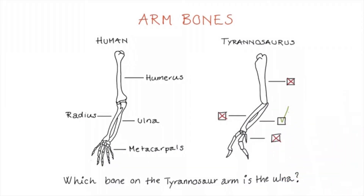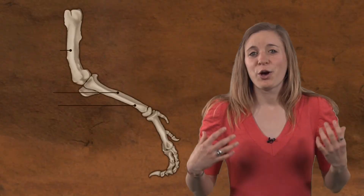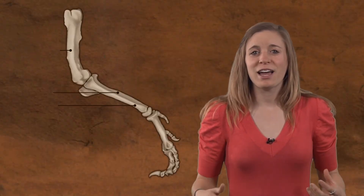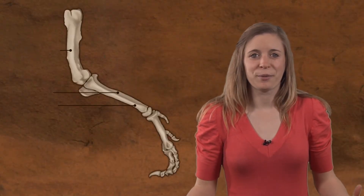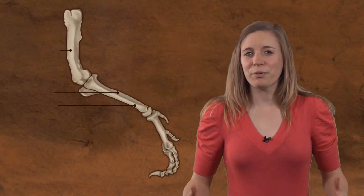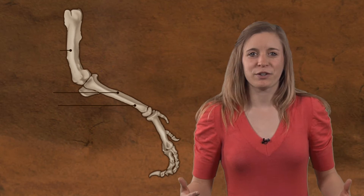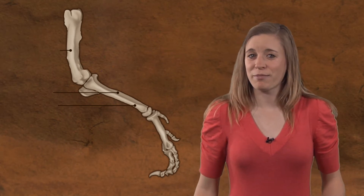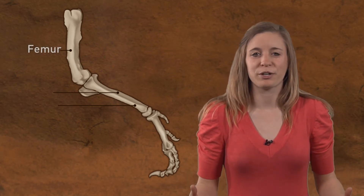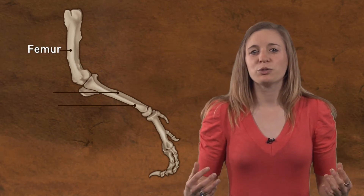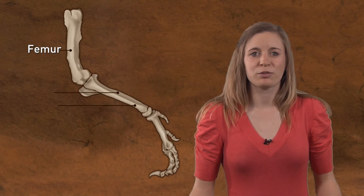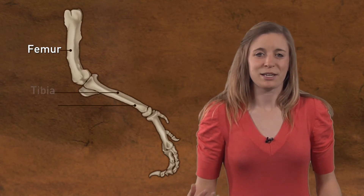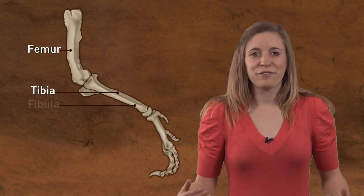The same arm bones are present in both humans and Tyrannosaurus. We humans have the same bones in our legs as well. The upper leg bone of Tyrannosaurus rex, which is the same one in my leg, is called a femur. The two lower leg bones are known as the tibia and fibula.